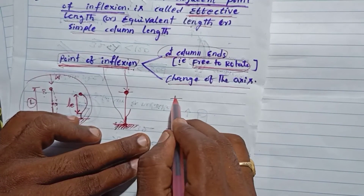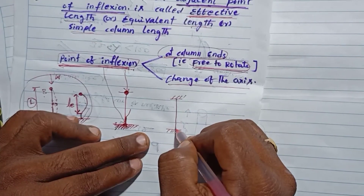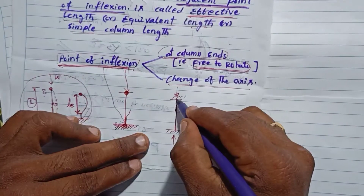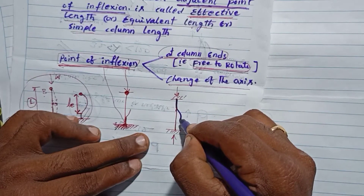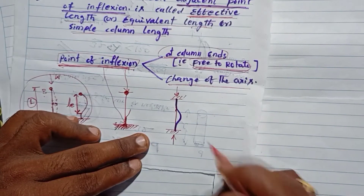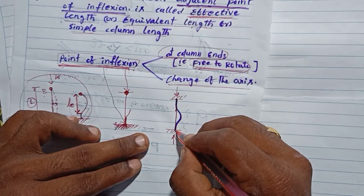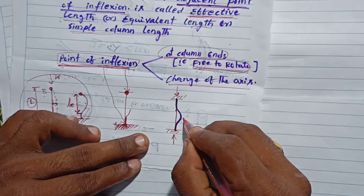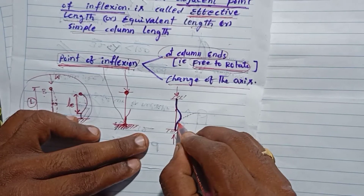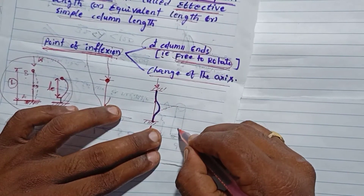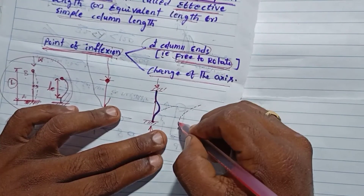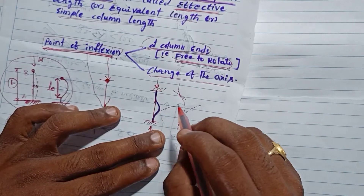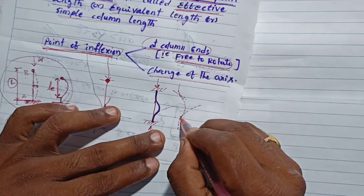Look at this diagram. There are two supports and this is the column with a compressive load. If you observe the diagram, as the column displaces to the right side of the axis and then changes direction, that particular point where the direction changes is the point of inflection.